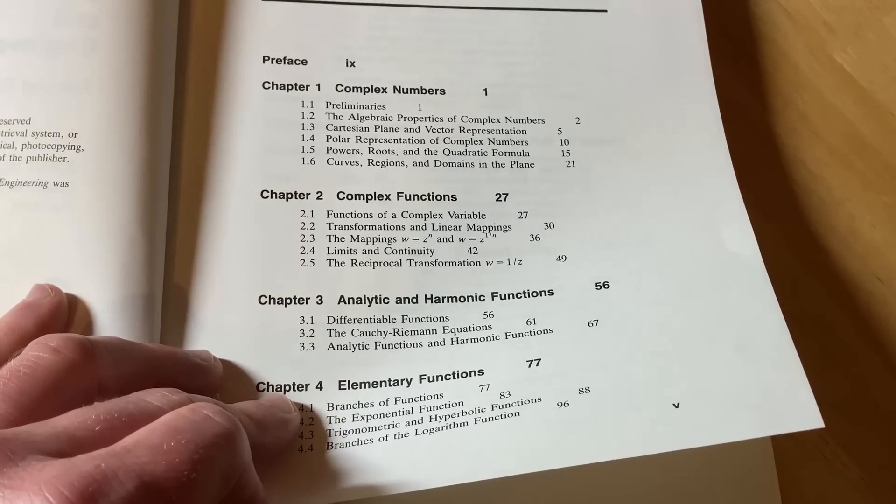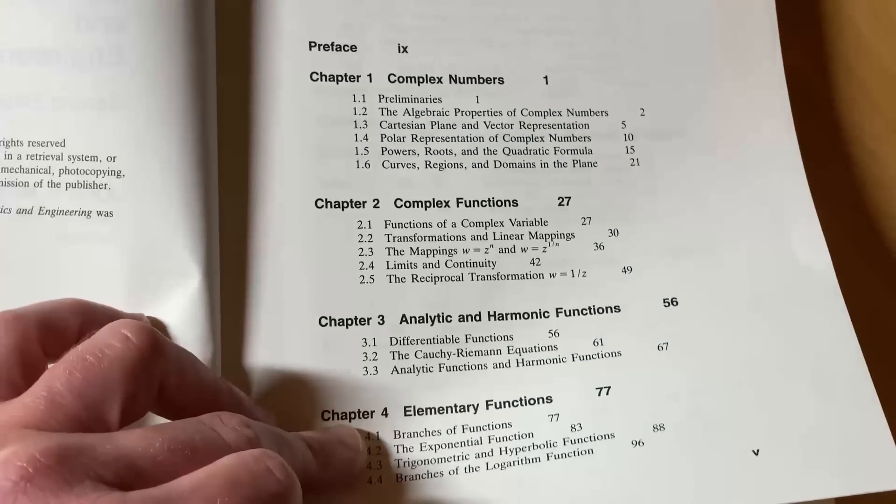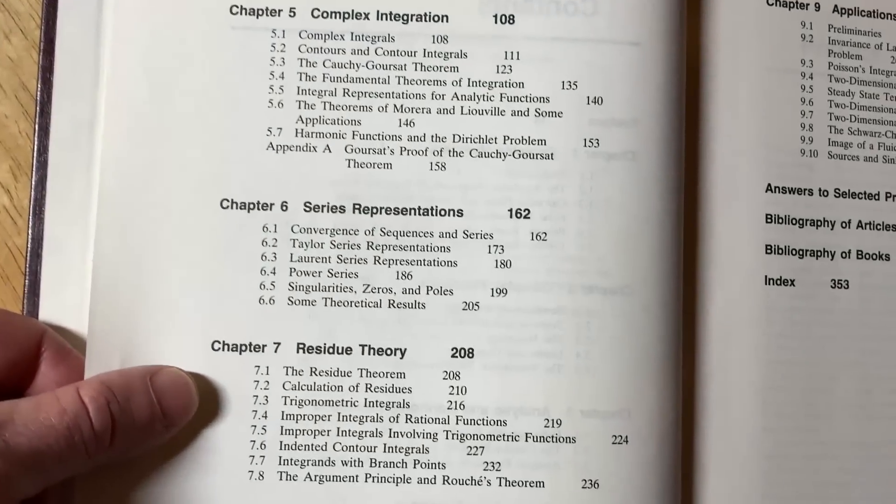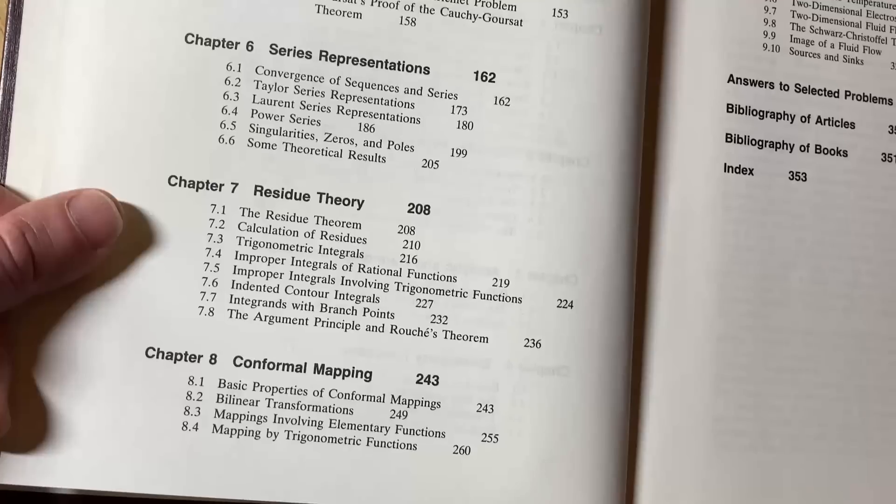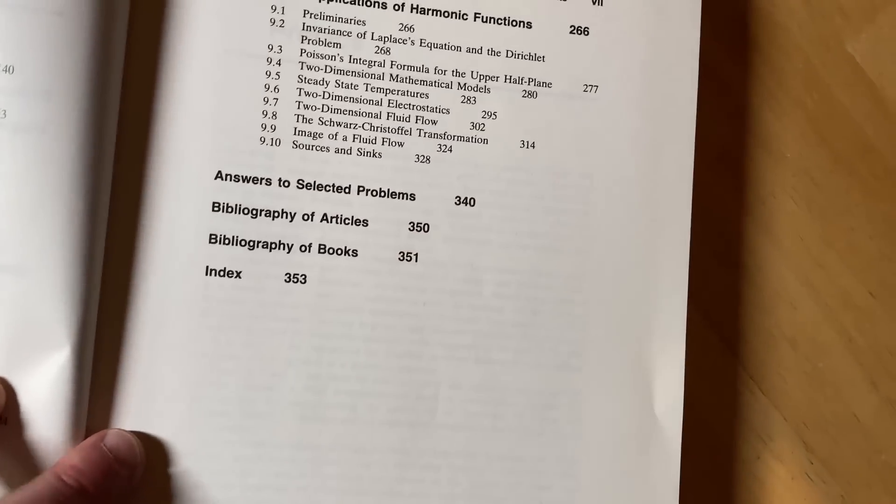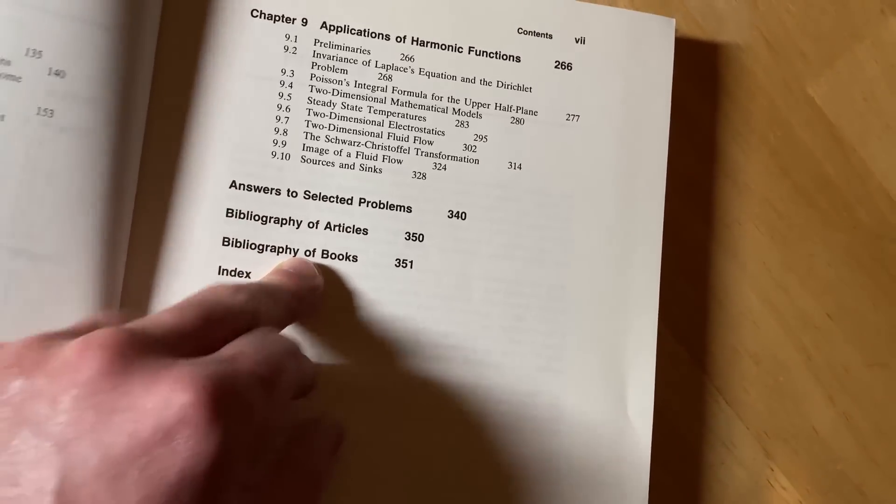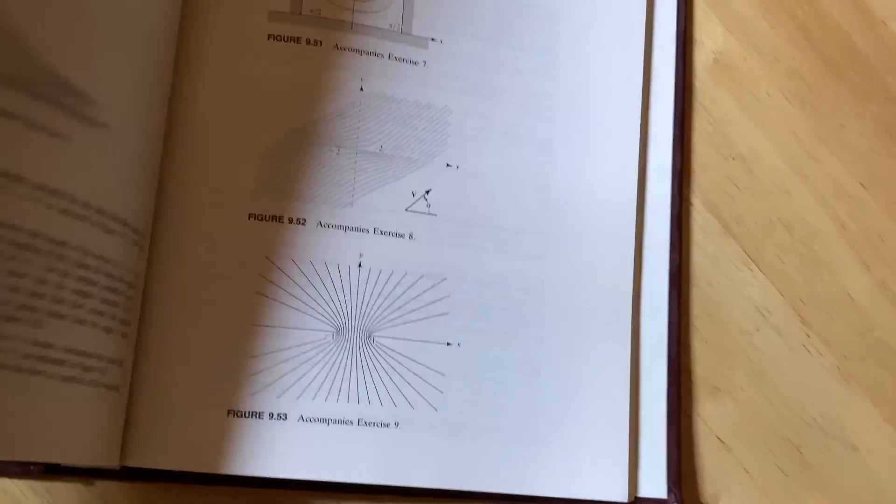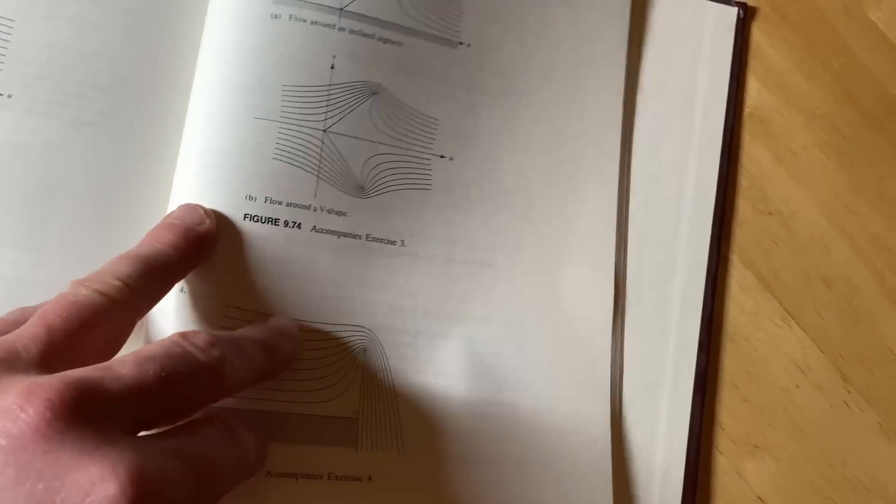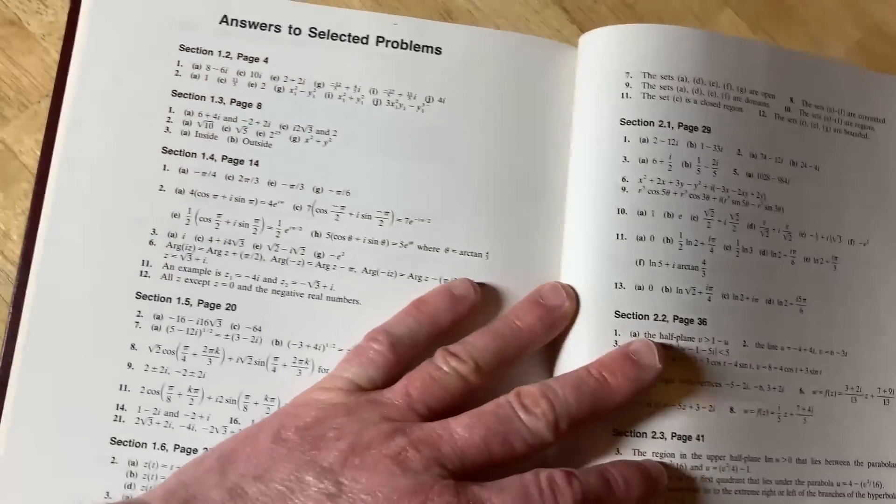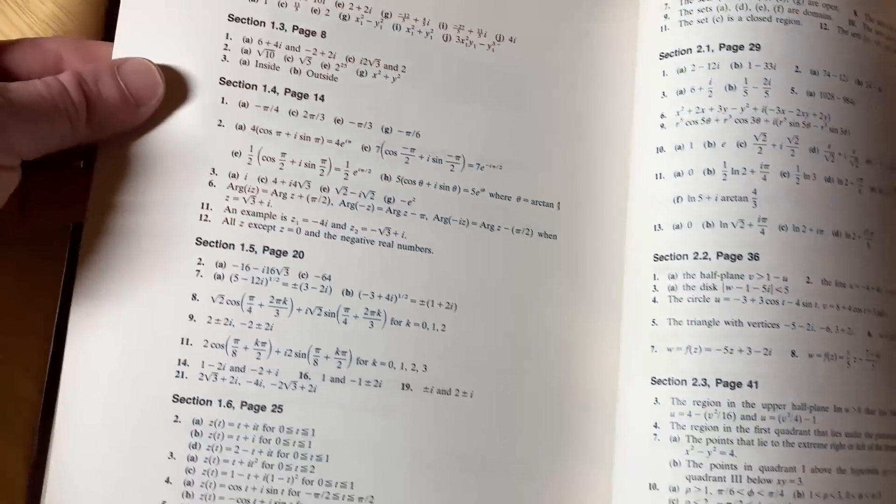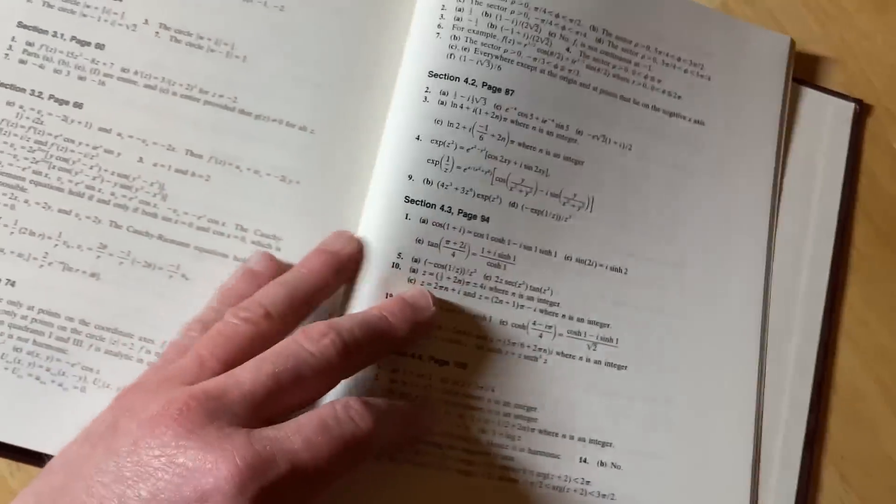So this is a subject that's very accessible to people, complex variables. And this is a pretty good book. So it starts with really basic stuff, as you can see here. Complex numbers, complex functions, analytic and harmonic functions, elementary functions, complex integration, series representations, residue theory, and then conformal mapping, and then applications of harmonic functions. It also has answers to selected problems. And it doesn't have a ton of answers, but it does have some answers. Let me just show you so you see exactly what I'm talking about. And that's always what happens with these books. And it's really unfortunate, but it's just the way the world is. So you do get some answers, but you don't get all of them, right? So that is unfortunate, but it's what we have.